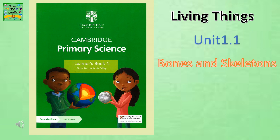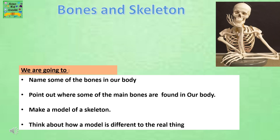Living Things, Unit 1.1: Bones and Skeletons. In this unit, we are going to name some of the bones in our body, point out where some of the main bones are found in our body, make a model of a skeleton, and think about how a model is different from the real thing.